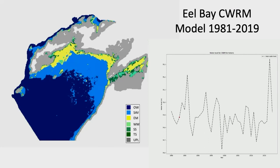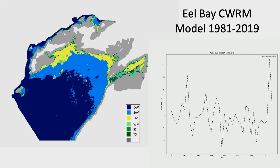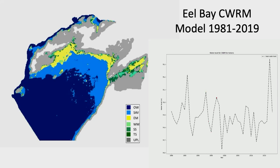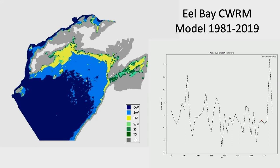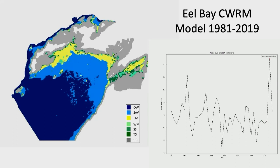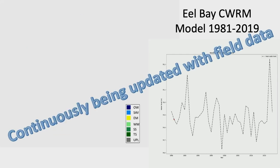Here is what the coastal wetland response model shows when we input information for Eel Bay: you can see a response in submergent aquatic vegetation with water level change, but less response in the meadow marsh community at upper elevations or in swamp. Importantly, the CWRM is being continuously updated with field data — it can be and is being validated and refined with field data inputted each year.